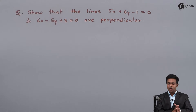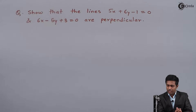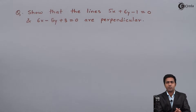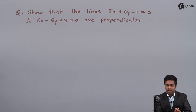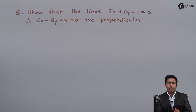Hello friends. In this question we have to show that the two lines — 5x plus 6y minus 1 equal to 0 and 6x minus 5y plus 3 equal to 0 — are perpendicular.